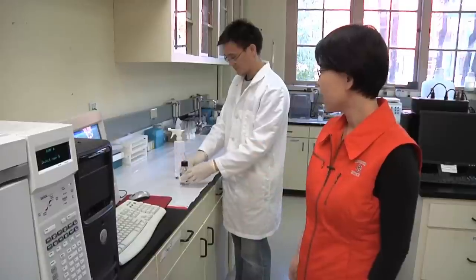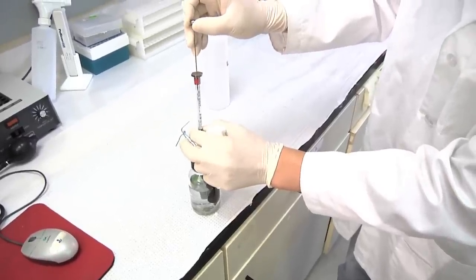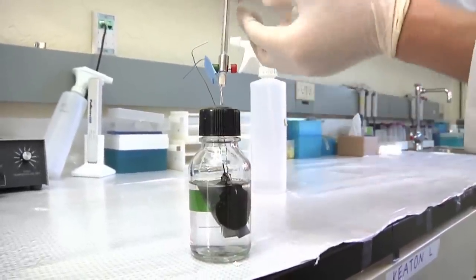So this is a small microbial electrolysis cell we use to produce hydrogen from organic materials. This technology can be potentially used for producing hydrogen from wastewater.